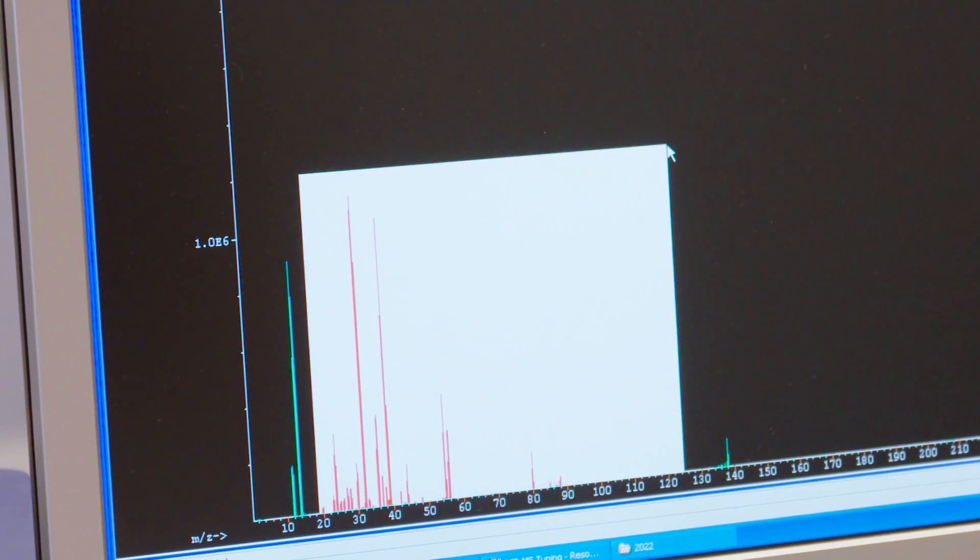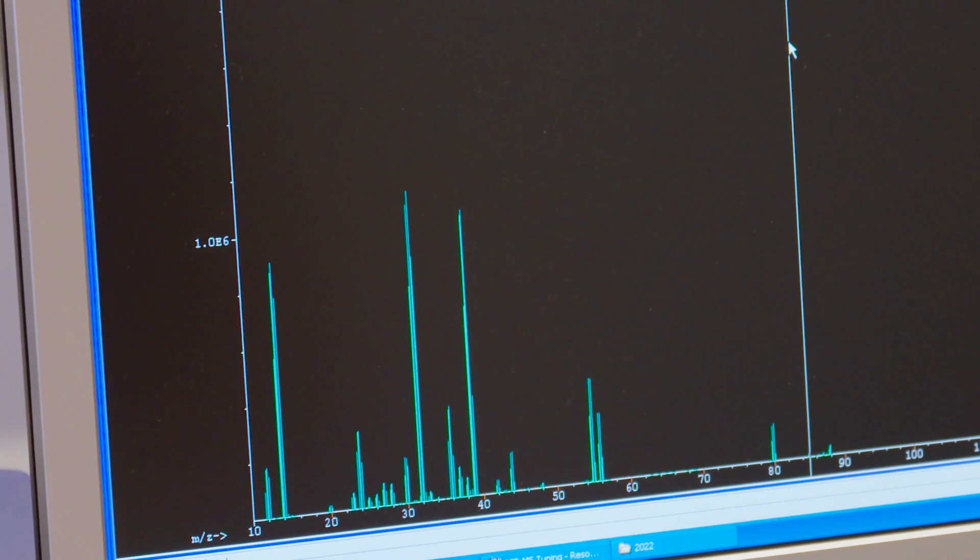That is called ICP mass spectrometry. This is a very common technique for analyzing metals at low concentrations of around 1 microgram per litre.